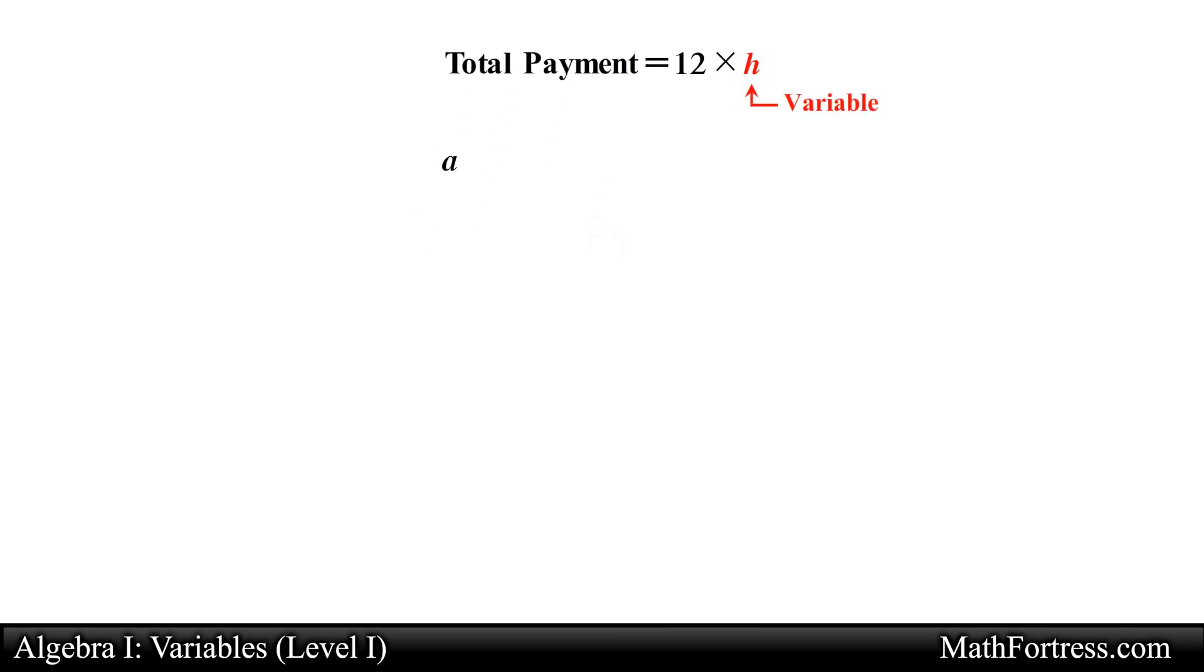A variable is nothing more than a symbol, usually a letter of the alphabet used to represent one or more numbers. That's all they are. The numbers that are represented by the variables are called the values of the variable.